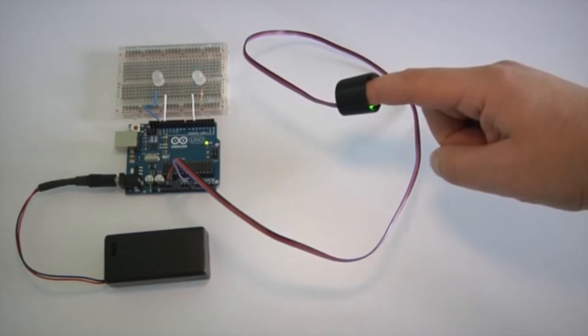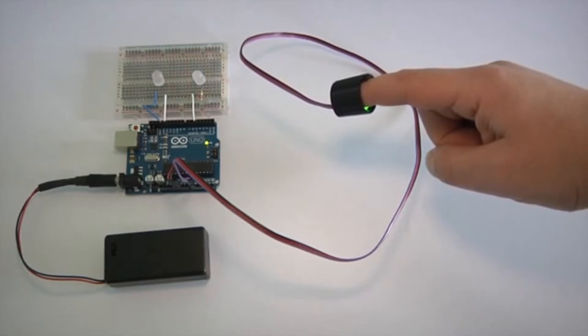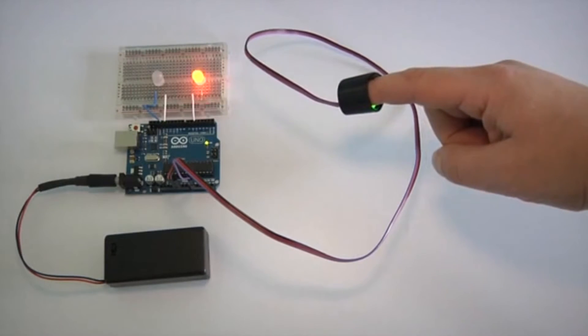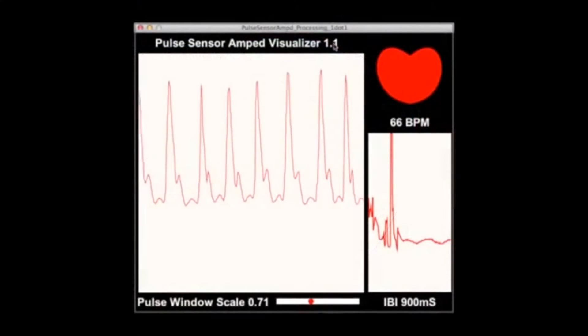It also blinks one LED and fades another LED. You can think of the LEDs as placeholders in the code for you to trigger events in your own project.